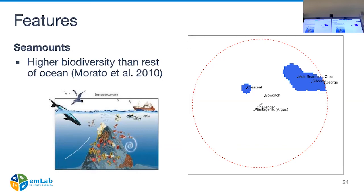They ruled out the nearshore seamounts but did extend protection for the Muir seamount chain and surrounding seamounts — Saboni and George — out to 50 kilometers. Why protect an area around a seamount? Work by Telma Murata and colleagues in 2010 looked at seamounts and found that diversity dropped off as you moved away, with biodiversity somewhat higher than the open ocean out to about 30 to 50 kilometers, then dropping off quite quickly. By protecting the area around the seamount and not just its peak, you're really protecting the biodiversity that aggregates around it.